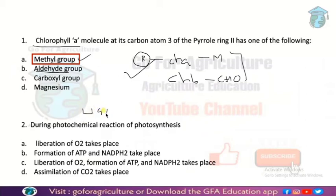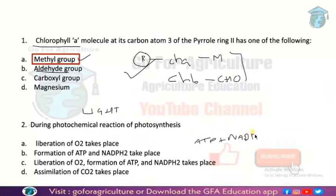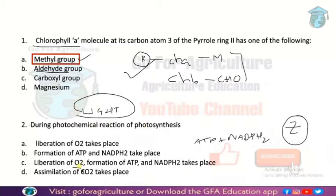During the photochemical reaction of photosynthesis — photochemical reaction is nothing but light reaction — what happens in the light reaction? There is liberation of O2, and two energy compounds are synthesized: ATP and NADPH. In non-cyclic photophosphorylation, the Z scheme, two compounds are synthesized — ATP and NADPH. So basically, in the light reaction, liberation of oxygen and formation of ATP and NADPH takes place. These two energy compounds act as ingredients for the dark reaction.